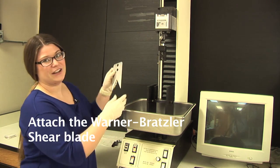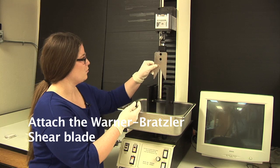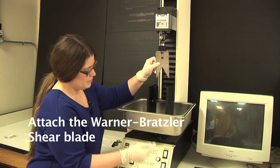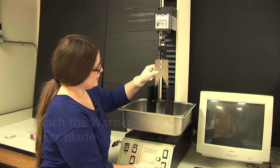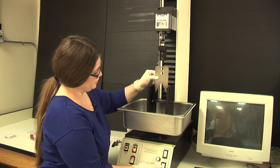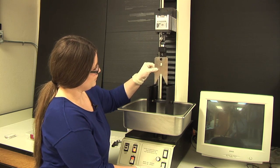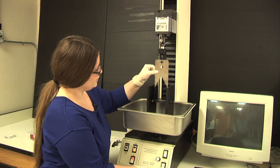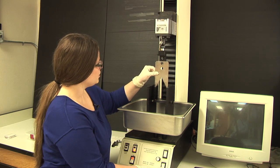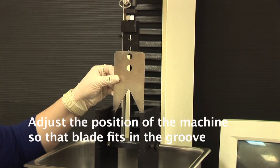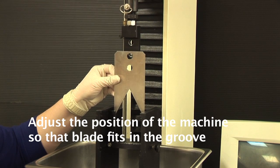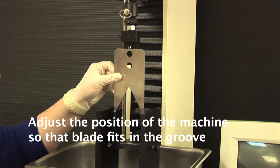And next we're going to attach the actual Warner Bratzler Shear blade, but to do this we need to make sure that it goes inside this groove that's right there. And so we're going to need to move the machine down so we can attach the blade while it's fitting in the groove to avoid damage to the blade.